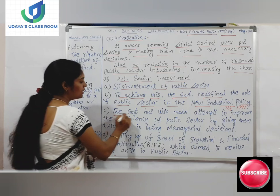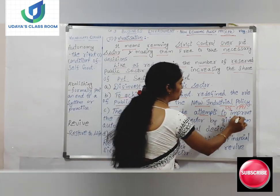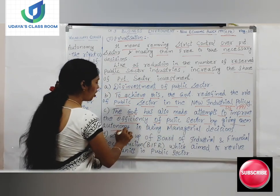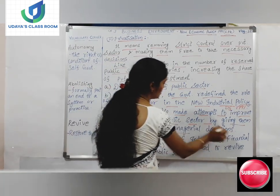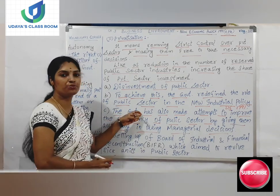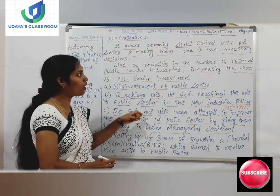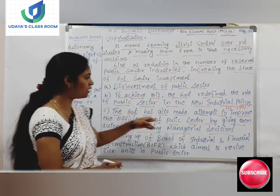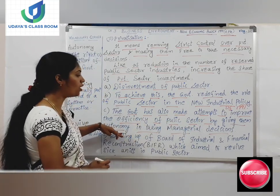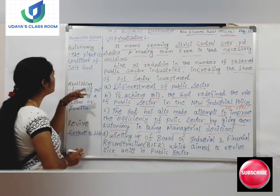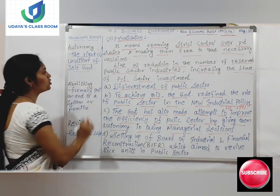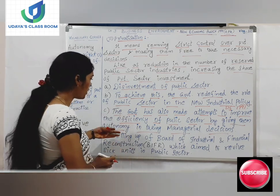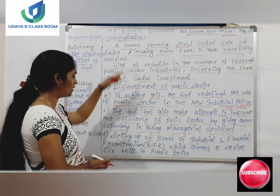The government has also made attempts to improve the efficiency of public sector by giving them autonomy in taking managerial decisions. The government sector could not concentrate in all areas of industries, and that is one reason the LPG system was introduced in 1991. They have given some autonomy in taking managerial decisions. Autonomy means the right or condition of self-governance — in general terms, freedom to function on its own without anybody's interference. This is the third policy brought under privatization.